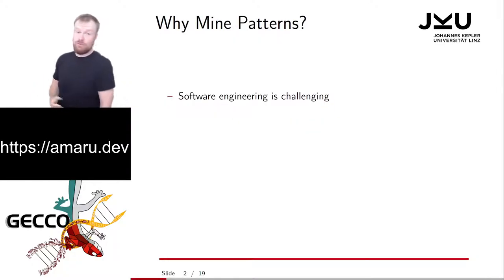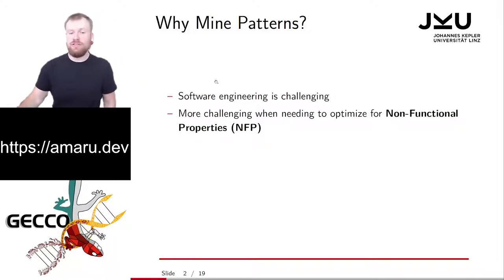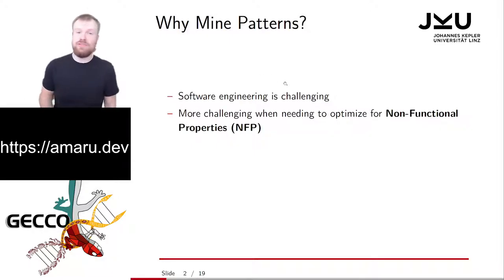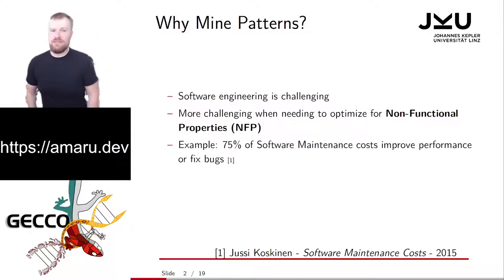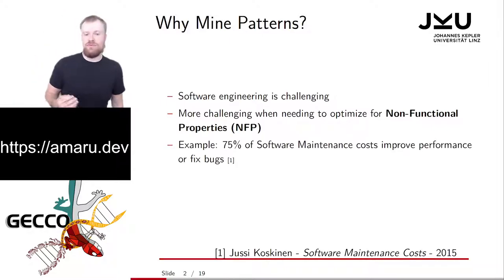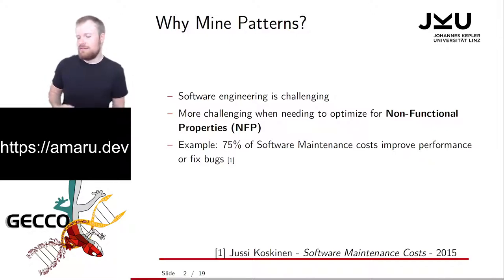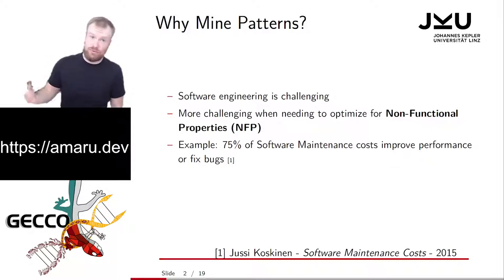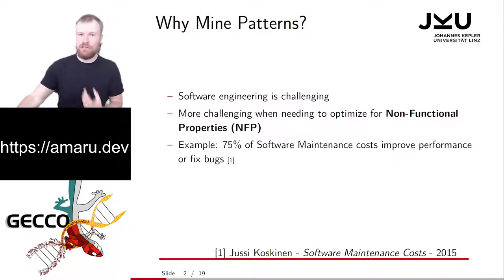Why do we want to do that? Software engineering is a pretty challenging task. It becomes even more challenging if you want to optimize for non-functional properties such as runtime performance, memory performance, or if you want to optimize data-specific hardware. For example, 75% of software maintenance is perfective maintenance, meaning they either improve the performance of something or fix bugs. Overall, 90% of all software engineering is estimated to be software maintenance. That's a pretty huge field that we are all trying to tackle with GI.